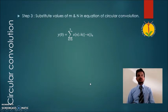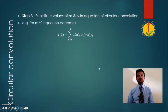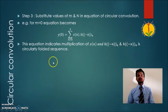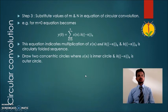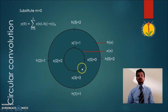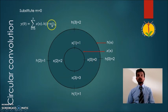Now let us substitute different values of n and m in the circular convolution equation. Starting from m equal to 0, the equation becomes y of 0 equals summation from n equal to 0 to 3 of x of n times h of minus n. This means we multiply x of n and h of minus n, where h of minus n is the circularly folded sequence. We draw two concentric circles with x of n as the inner circle and h of minus n as the outer circle, plotting x of n samples anticlockwise and h of minus n samples clockwise.